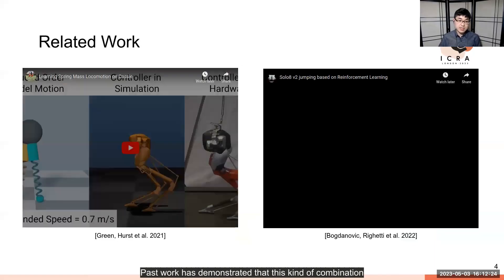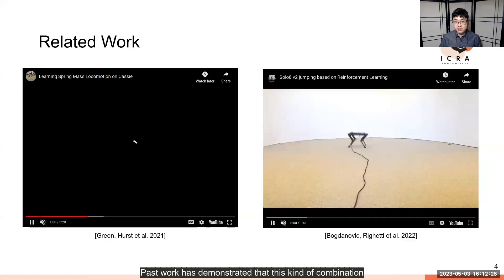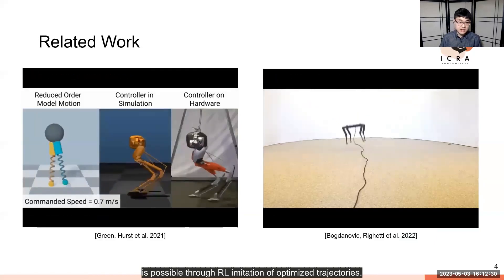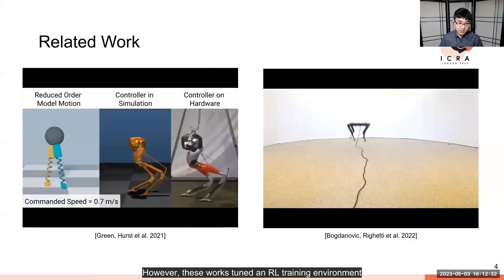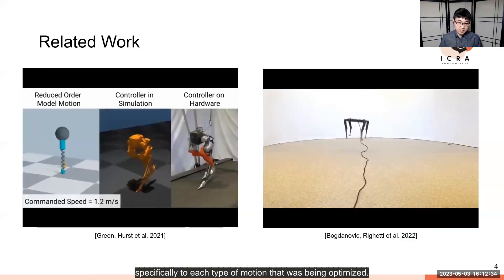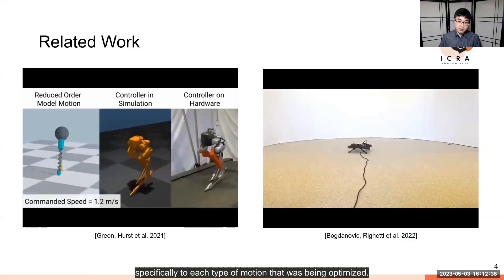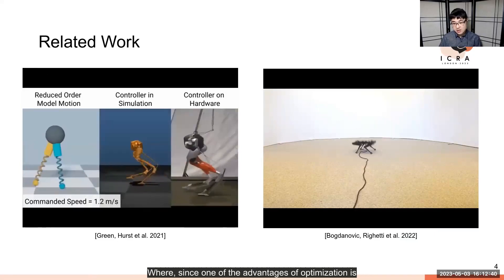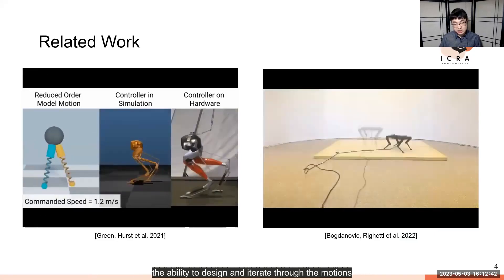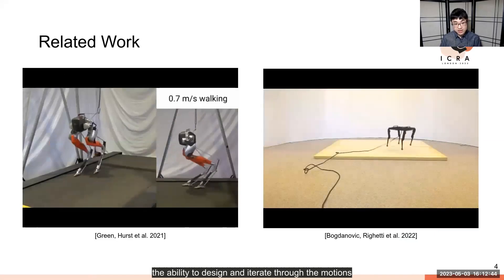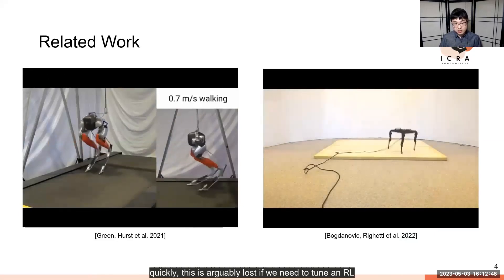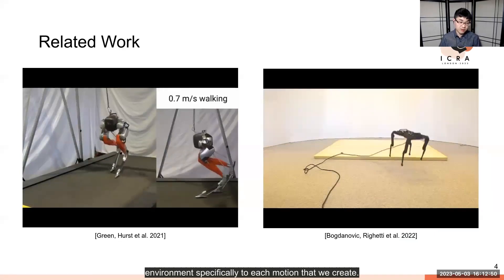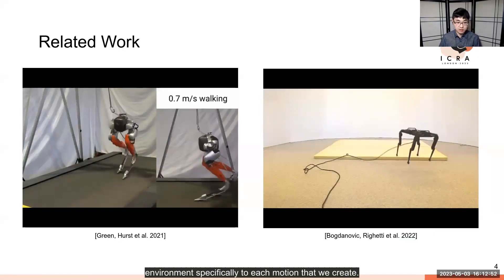Past work has demonstrated that this combination is possible through RL imitation of optimized trajectories. However, these works tuned an RL training environment specifically to each type of motion being optimized. Since one of the advantages of optimization is the ability to design and iterate through motions quickly, this is arguably lost if we need to tune an RL environment specifically to each motion we create.